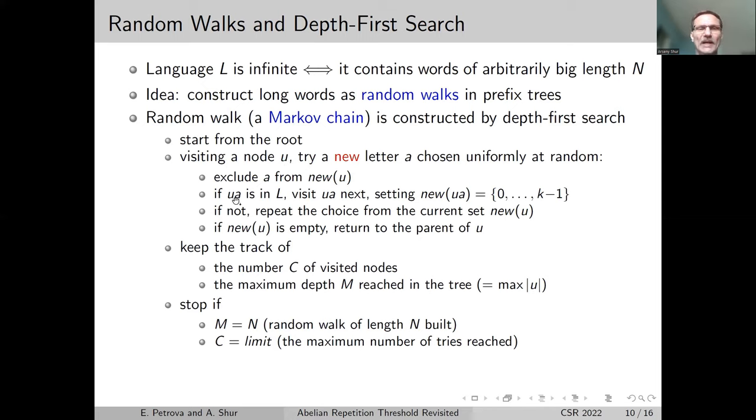If we can add it - meaning ua is in our language, we have a node ua in our prefix tree - then, as naturally for depth-first search, we go to ua and continue our search. If it is not in L, we try another letter, also chosen uniformly at random from the remaining letters. If the list of remaining letters is empty, this means we reach some dead end in the tree, so we return to the parent of our current node.